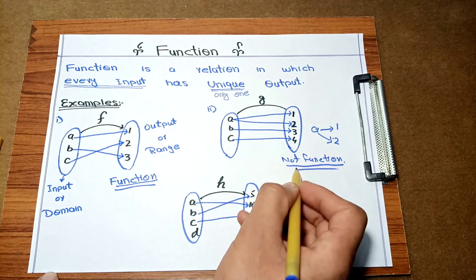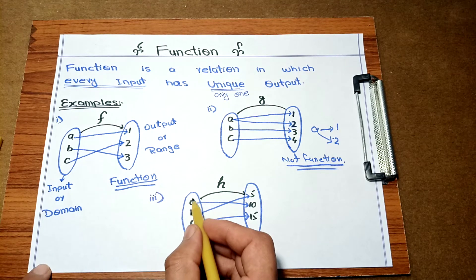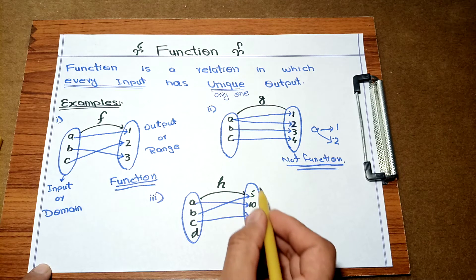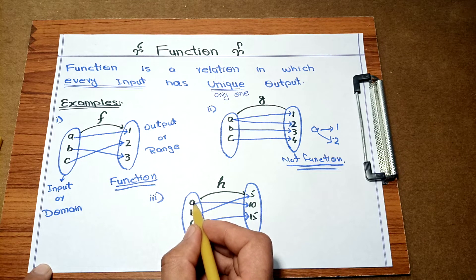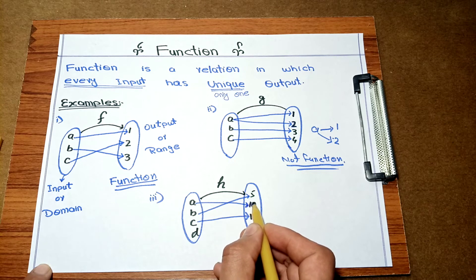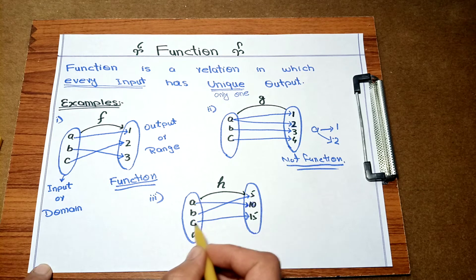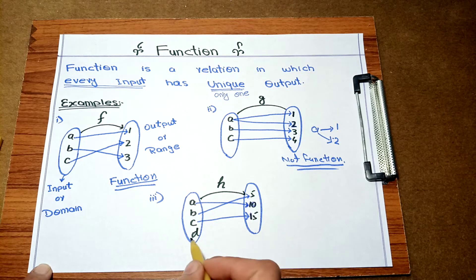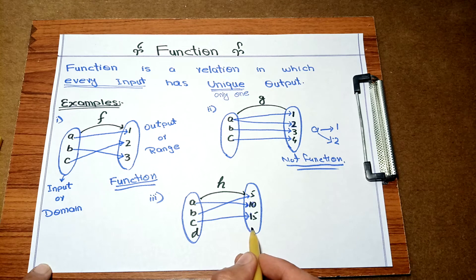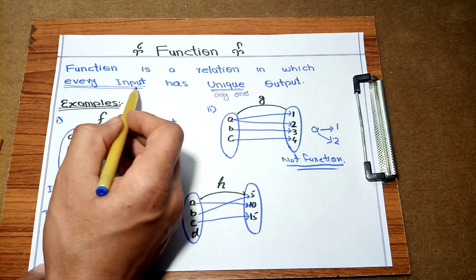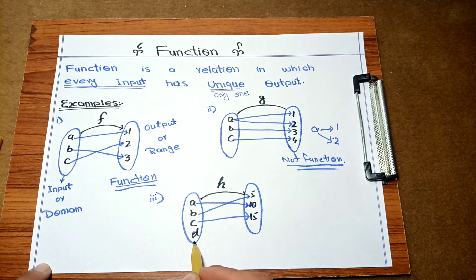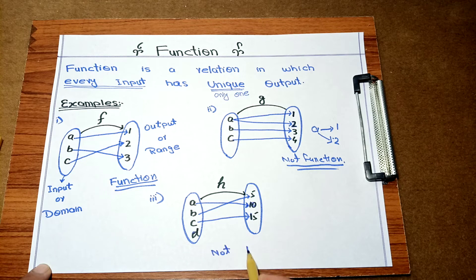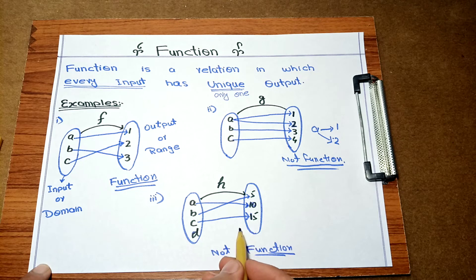In example 3, the inputs are A, B, C, and D, and the outputs are the range. A has output 10, B has output 5, C has output 15, but D has no output. Since every input must have a unique output and D has no output, this is not a function.